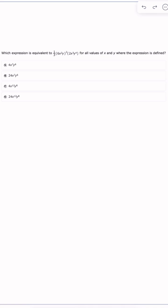Let me just go ahead and rewrite this so we can see this a little bit better. So one-third times 6x squared times y, all in parentheses squared, times 2x to the third times y to the fourth.